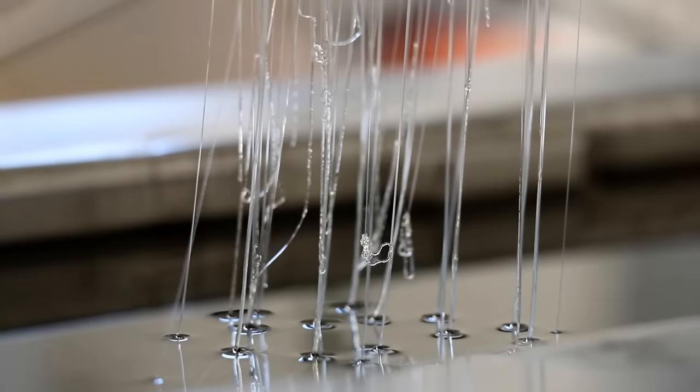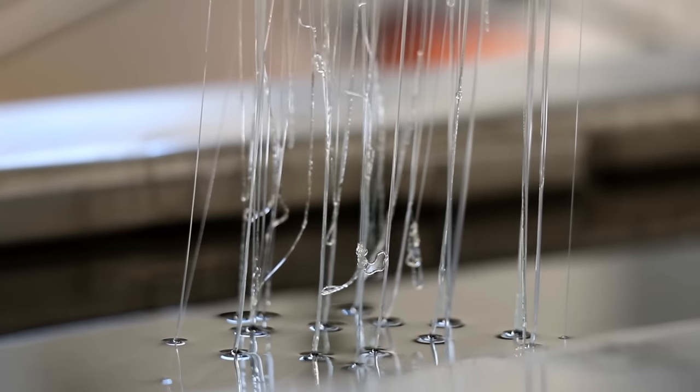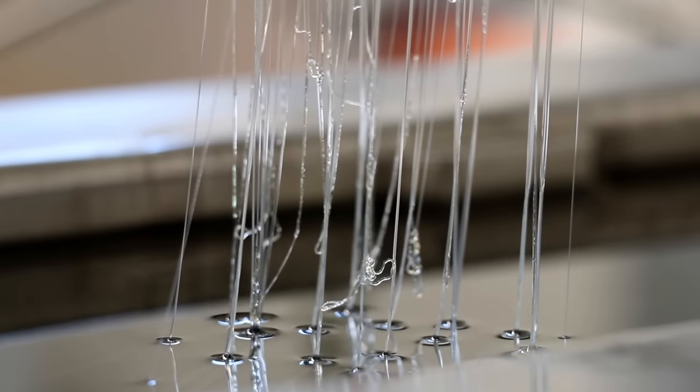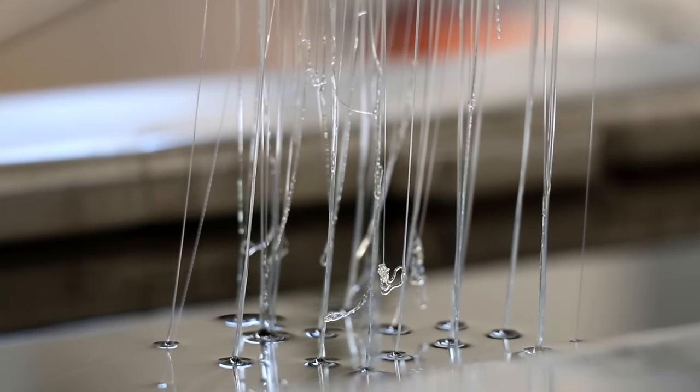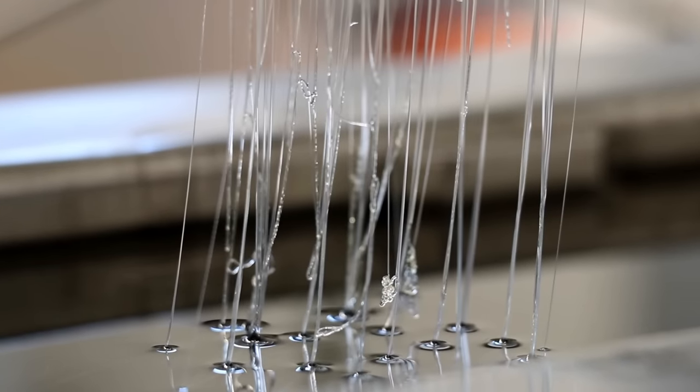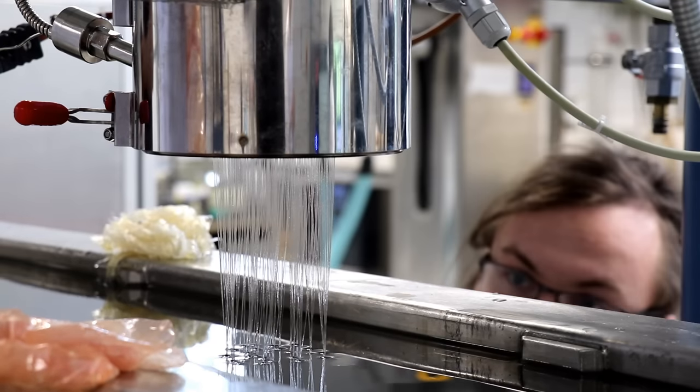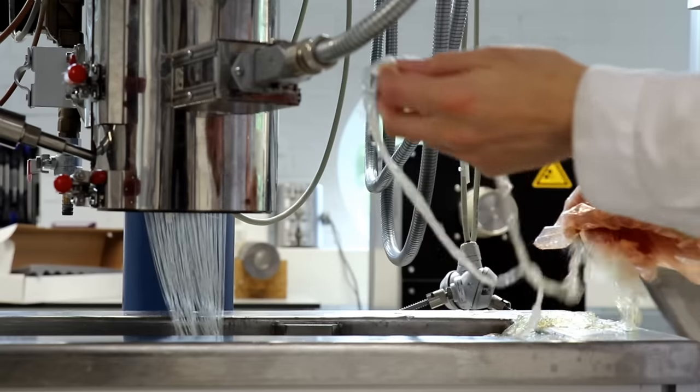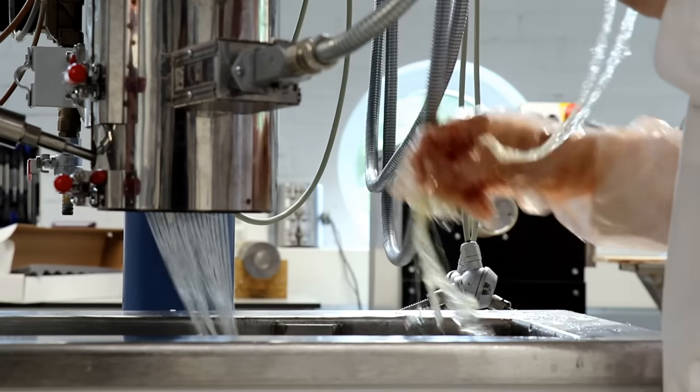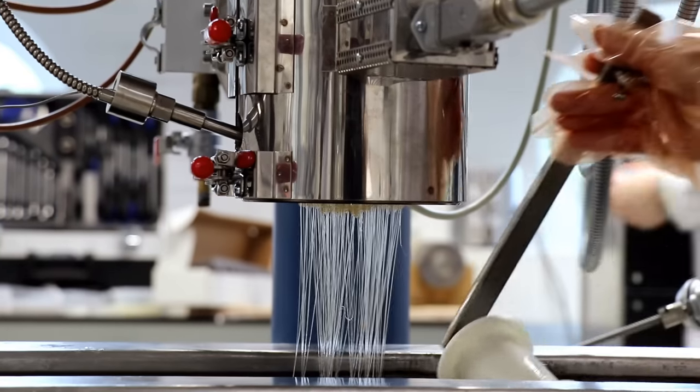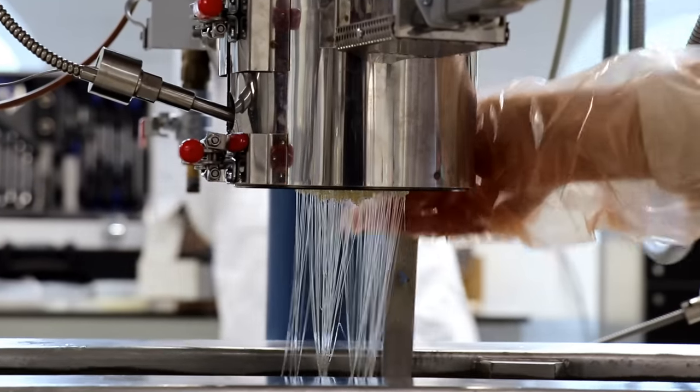In the water bath it coagulates again, and coagulation means that it solidifies again because cellulose is not soluble in water but ionic liquid is. So we wash away the ionic liquid and get the fibers. From this point in the water bath we can then take the fibers and wind them around this roller down there in the water bath and then over to the godet.